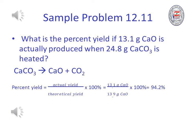Percent yield equals actual yield divided by theoretical yield times 100%, equals 13.20 grams divided by 13.90 grams times 100, equals 94.2%.